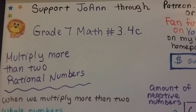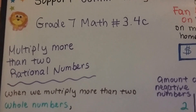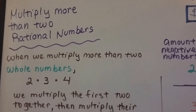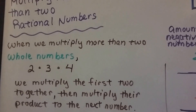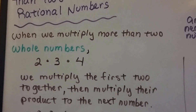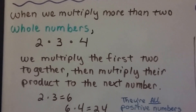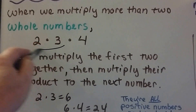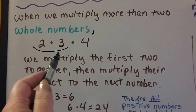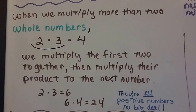Grade 7 math, number 3.4c: multiply more than two rational numbers. This is a remake of a previous video, so I hope this one is a better version for you. When we multiply more than two whole numbers — like 2 times 3 times 4 — we multiply the first two numbers together, get a product, and then multiply the product by the last number. Same thing with rational numbers.